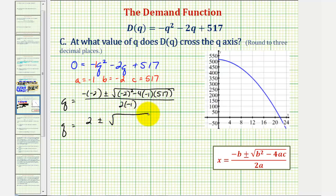So we have Q equals positive two, plus or minus the square root of, this is going to be four plus 2068, or 2072, divided by negative two.